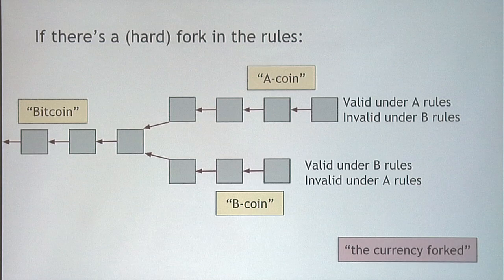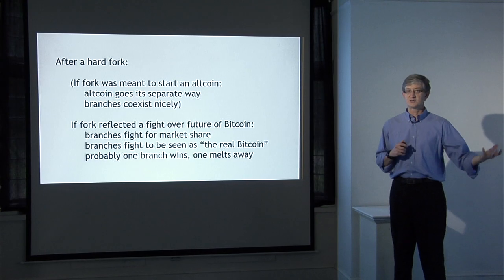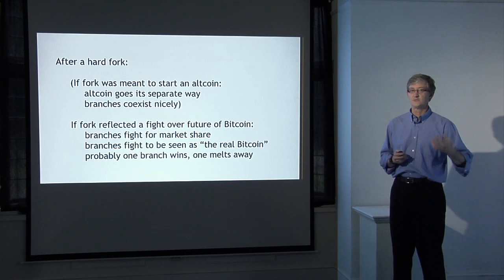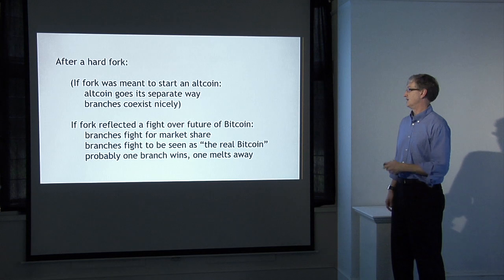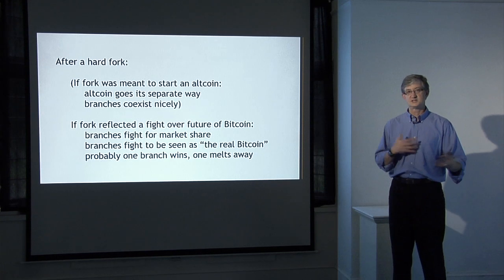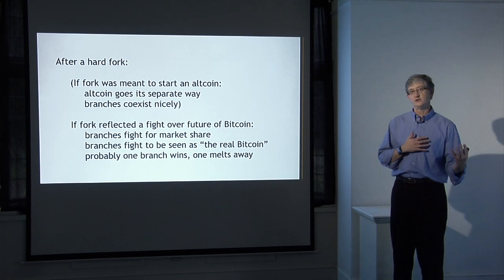After a hard fork like this, there are really two cases. The first case is where the fork was not intended as a disagreement about the rules, but was designed as a way of starting an altcoin — a new kind of cryptocurrency with different rules. If somebody just wanted to start their own currency and found it convenient to start with a rule set very close to Bitcoin's, that's not really a problem. The altcoin goes its separate way, the branches coexist peacefully, and some people prefer Bitcoin while some prefer the altcoin.